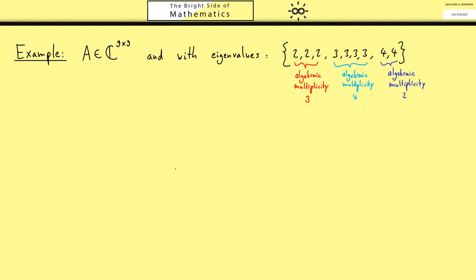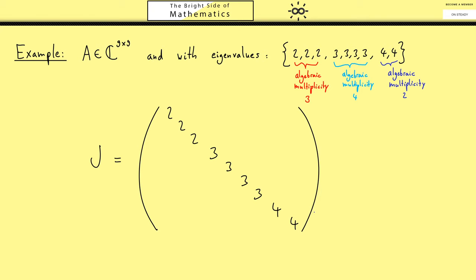If the matrix A was diagonalizable, we would find as a Jordan Normal Form just a diagonal matrix where we find these eigenvalues on the diagonal. Of course, there are different possibilities for the order of these eigenvalues, but we know how often they should occur, exactly with the algebraic multiplicities. However, what we really want for the Jordan Normal Form is to group the same eigenvalues.